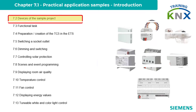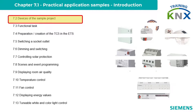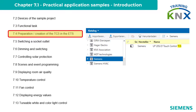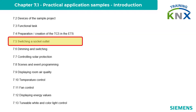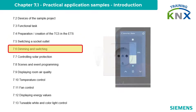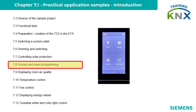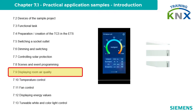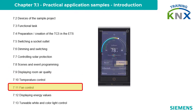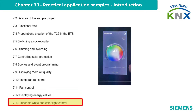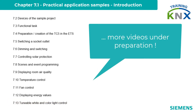7.2 Devices of the sample project. 7.3 Functional task. 7.4 Preparation — Creation of the TC5 in the ETS. 7.5 Switching a socket outlet. 7.6 Dimming and switching. 7.7 Controlling solar protection. 7.8 Scenes and event programming. 7.9 Displaying room air quality. 7.10 Temperature control. 7.11 Fan control. 7.12 Displaying energy values. 7.13 Tunable white and color light control. The list and the number of individual videos may expand at any time.